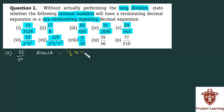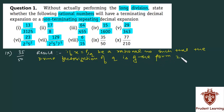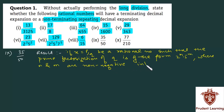We know that if x is equal to p by q, a rational number, such that the prime factorization of q, which is the denominator, is of the form 2 to the power of n into 5 to the power of m, where n and m are non-negative integers, then x has a terminating decimal expansion.